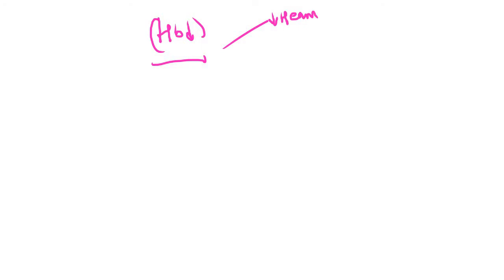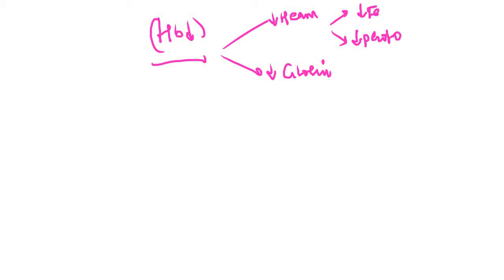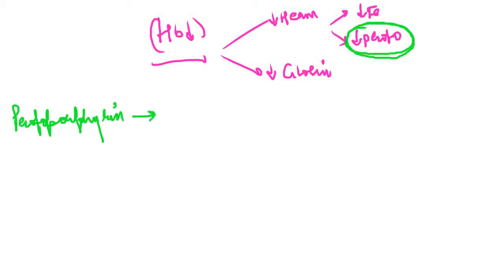As you already know, in case of microcytic anemias, the basic pathophysiology is that there is a reduction in the concentration or production of hemoglobin, which may occur as a result of decreased production of heme or decreased production of globin. Decreased production of heme can occur because of decreased iron or decreased protoporphyrin. In case of sideroblastic anemia, the production of protoporphyrin is decreased, which leads to decreased heme, decreased hemoglobin, and microcytic hypochromic anemia.